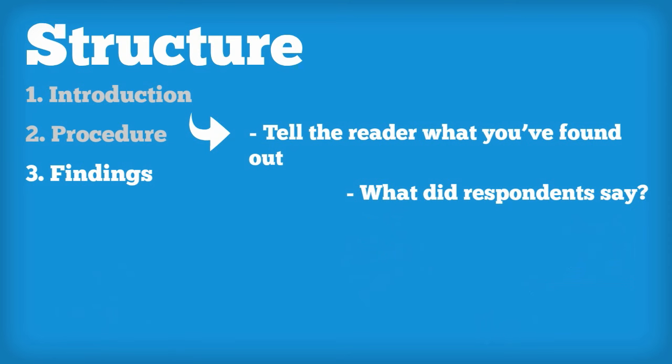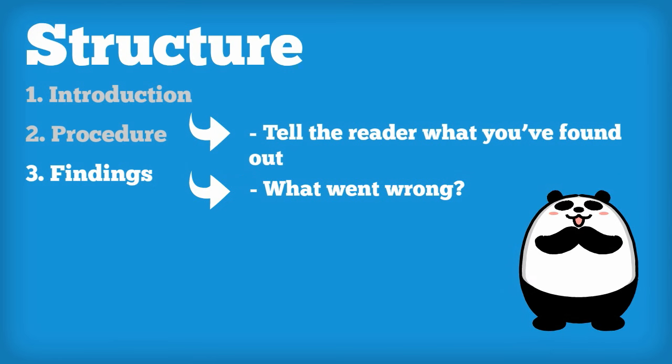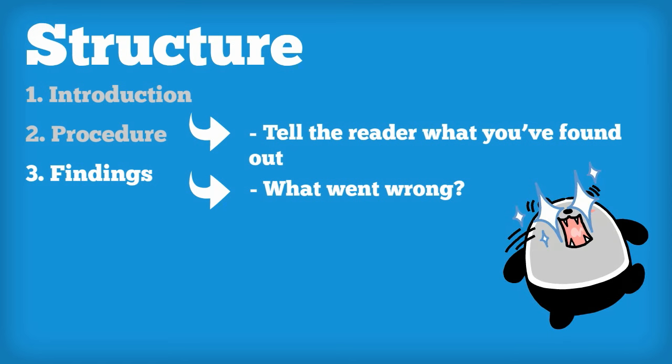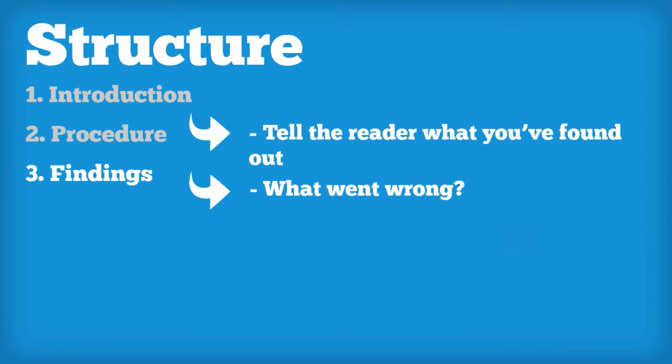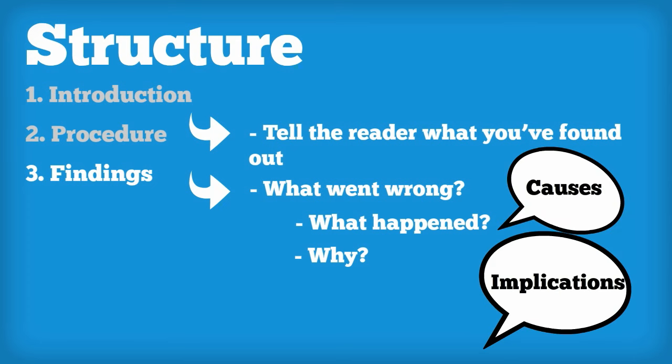The findings section is also a good place to outline anything that went wrong when we were collecting our data. A lot of the time, problems can be useful for our research. In fact, sometimes we can learn more when things go wrong. The important thing is to say what happened and why. We need to discuss the causes and implications of the problems we encountered.